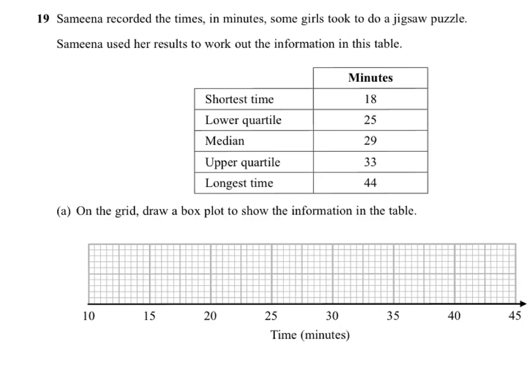On the grid, draw a box plot to show the information in the table. Now what you need to do before you start is check how many squares make five. We can see we've got ten little squares making five, so therefore two small squares will stand for one. I'll just draw that larger. Two small squares, so if that was naught, then that would be one. We must bear that in mind when we start plotting the points.